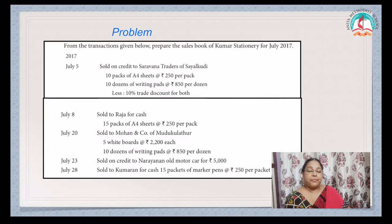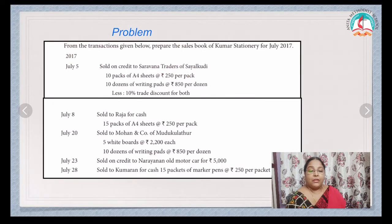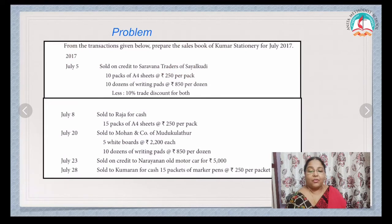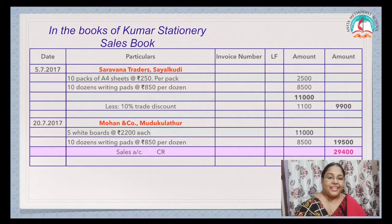See this problem. From the transactions given below, prepare the Sales Book of Kumar Stationery for July 2017. Sold on credit to Saravana Traders — credit transaction, it will be entered. Sold to Raja for cash — no, because it is a cash transaction. Sold to Mohan and Co of Mudukulathur — credit transaction, it will be entered. Sold on credit to Narayanin — old motor car, which is an asset — this will not come in the Sales Book. Sold to Kumaran for cash, 15 packets of Marker Pins — since it is a cash transaction, this will also not come in the Sales Book.